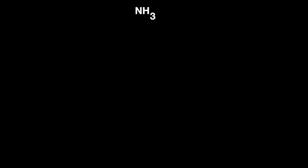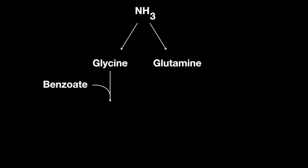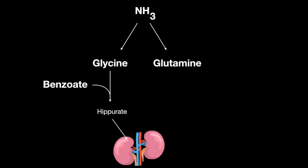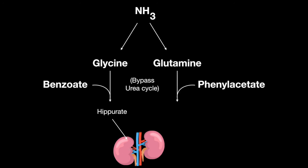Further, ammonia is captured and turned into glycine and glutamine. To excrete glycine, it can react with benzoate, which produces a product that can be excreted by the kidney, bypassing the urea cycle. As well, phenyl acetate reacts with glutamine to form a product that can also be excreted renally, also bypassing the urea cycle.